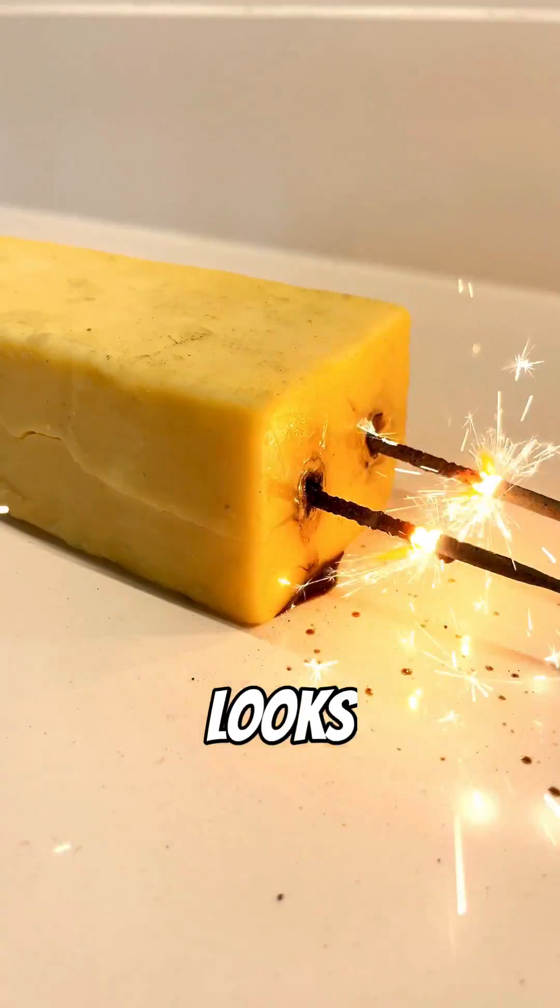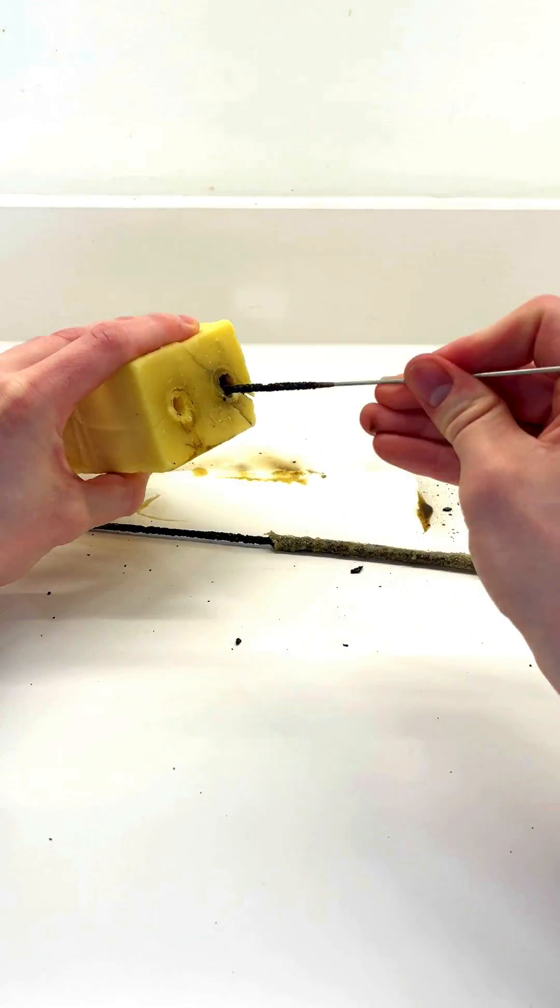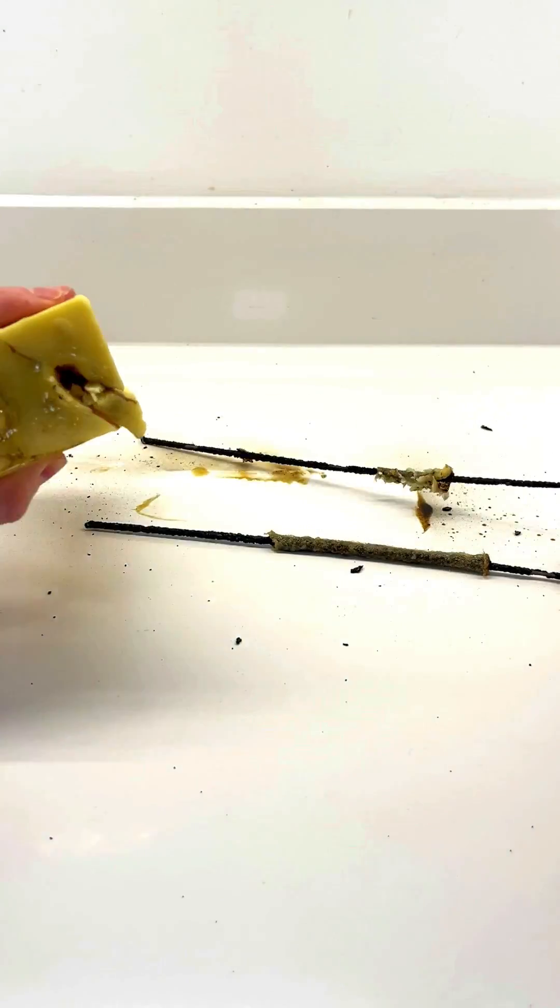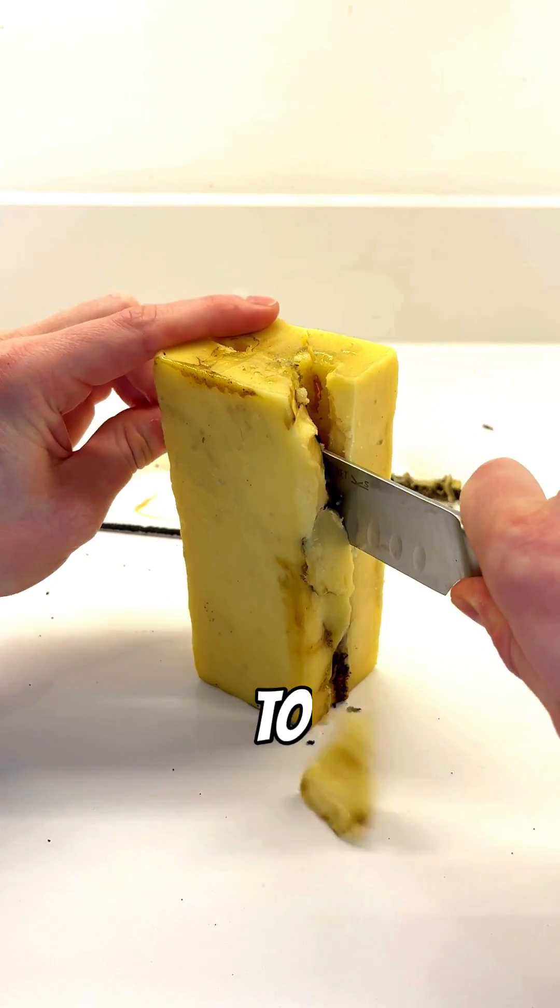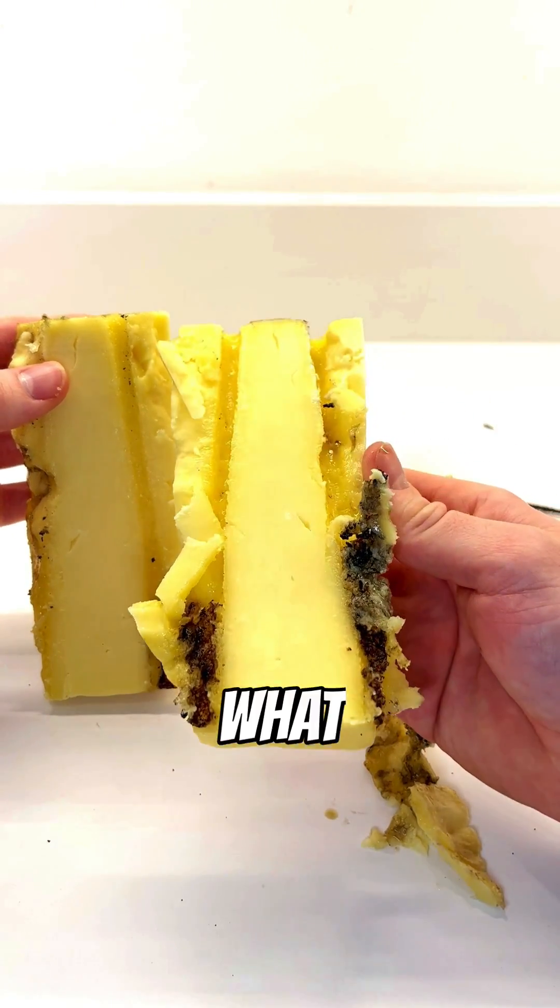I'm so curious what it looks like on the inside. Let's cut it open now and find out. Some melted cheese. Nice. The whole block is warm to the touch. Wow. It looks like a cheesy train track. What next?